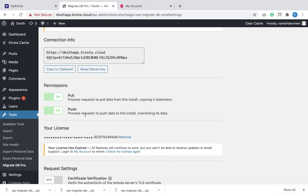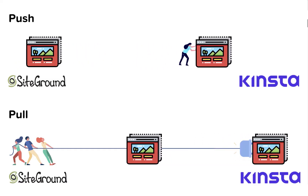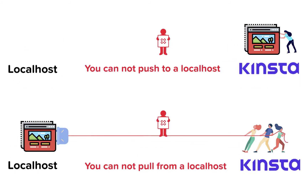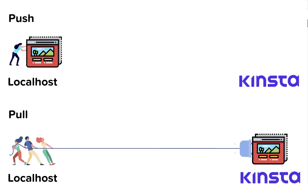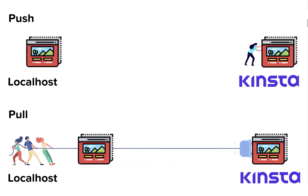You can enable only one permission if you want. For example, if both websites are on the internet, you can either choose to push or pull. But you cannot pull website content from the local host because the website is not on the internet. If you want to move your local website to a host on the internet like Kinsta, you should use the push functionality from the local host — you can push from local to production, but you cannot pull local content from the production host.